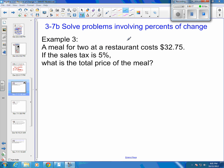So we've got a meal for two at a restaurant. It costs $32.75. And we've got some sales tax of 5%. We want to know the total price of the meal.